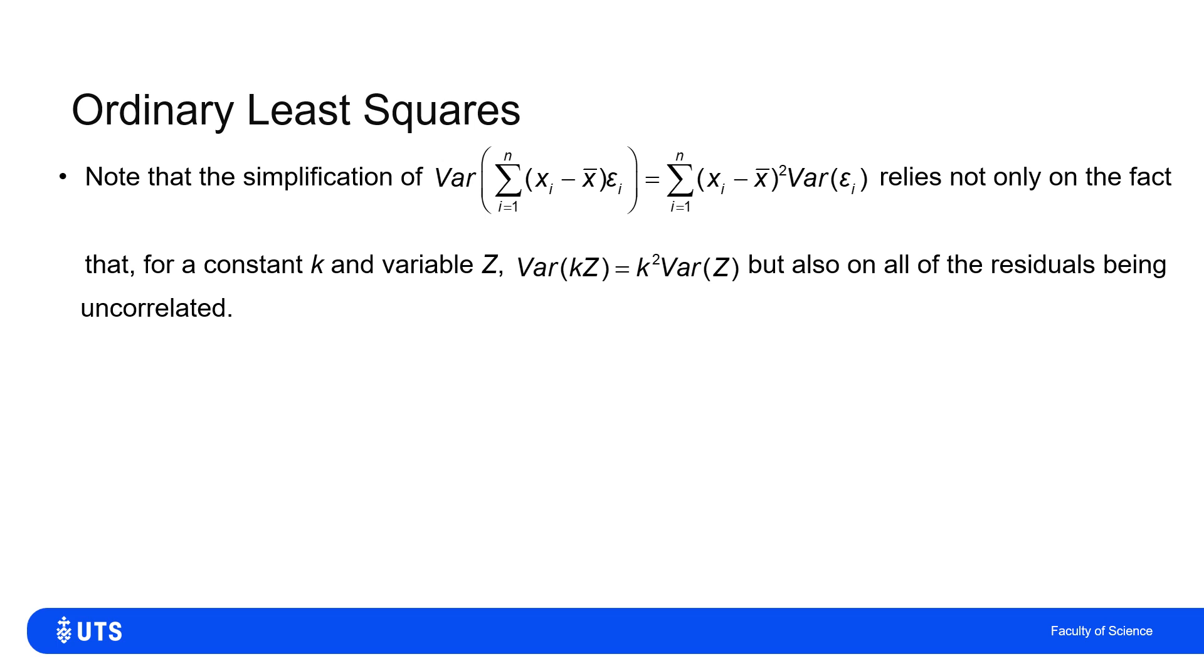If I do ordinary least squares, I will on average get the right answer. I will have unbiased estimates for my slope and my intercept. If I want to say how much variance there is around that estimator, then these nice simplifications do rely on having constant variance, uncorrelated residuals.